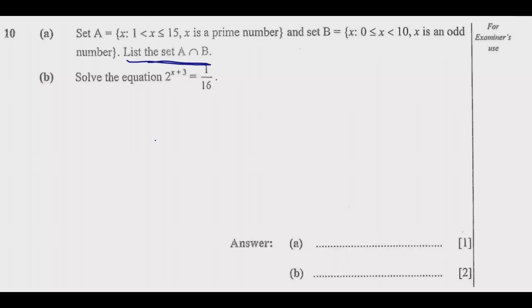It's important to understand the question. The tricky part is just remembering what prime numbers and odd numbers are. If you can remember these, then the question becomes very easy. Prime numbers are numbers that are only divisible by one and itself.